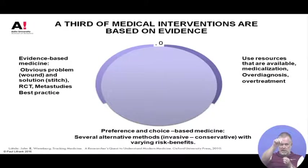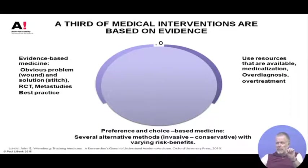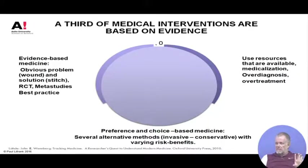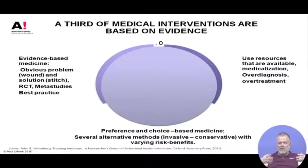If you go for the operation, you reduce the probability that you will die from prostate cancer, but nobody can give you an exact figure. Even if you could say your probability of dying from prostate cancer before age 80 goes down by 20 percent, at the same time you have a 42.5 percent risk of sustaining some kind of damage during the surgical procedure. Now make your choice — how easy is that? Not easy at all.